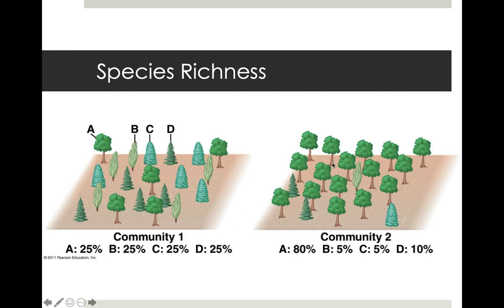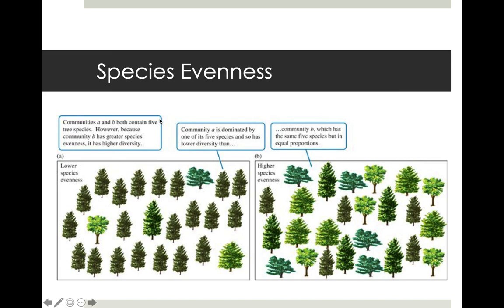Species richness alone can be misleading. By also using species evenness, you can detect underlying environmental problems that make one species dominate disproportionately. Both species richness — how many different species you have — and species evenness — the percentage of each species relative to others — are good ways to assess how healthy populations, communities, and ecosystems are.